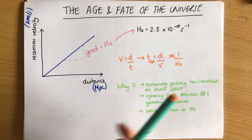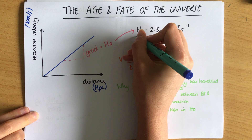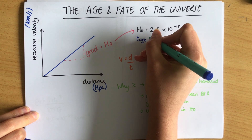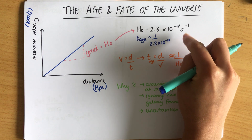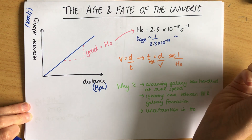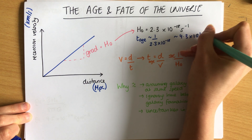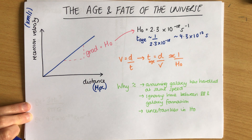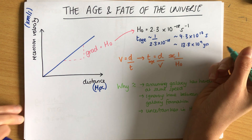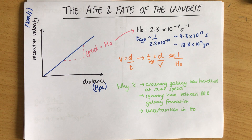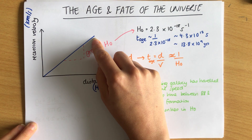The age of the universe is approximately equal to 1 divided by the Hubble constant: 1/(2.3×10⁻¹⁸ s⁻¹) ≈ 4.3×10¹⁷ seconds. Converting into years - dividing by 60×60×24×365 - gives 13.8×10⁹ years, which is approximately 14 billion years. This is what people often quote as the age of the universe.